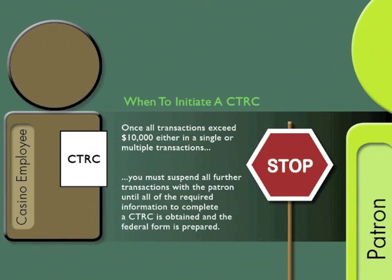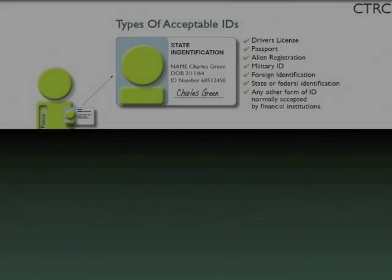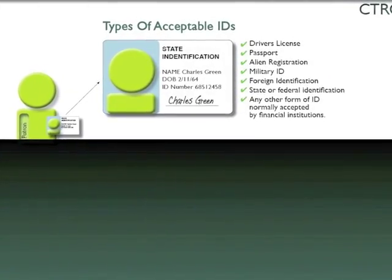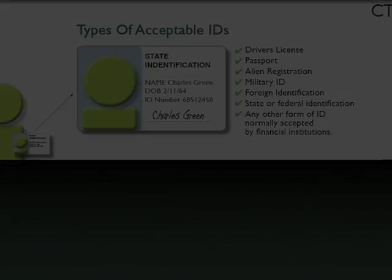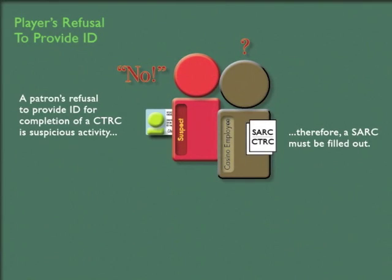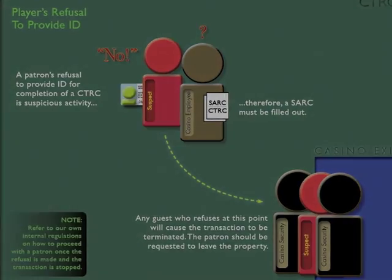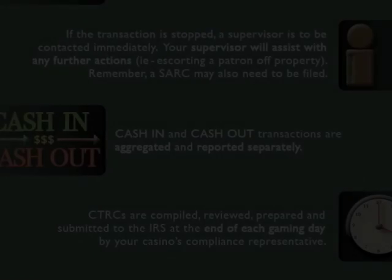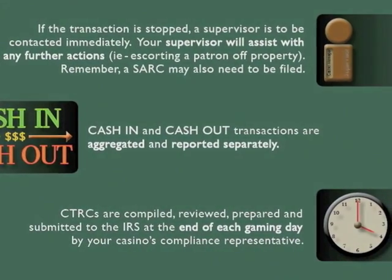Stop. You must then suspend all further transactions with the patron until all of the required information is complete. The types of acceptable IDs are: a driver's license, passport, alien registration, or military ID. Any guest who refuses at this point will cause the transaction to be terminated, and the patron should be requested to leave the property. Note: CTRCs are submitted to the IRS at the end of each gaming day by your casino's compliance representative.